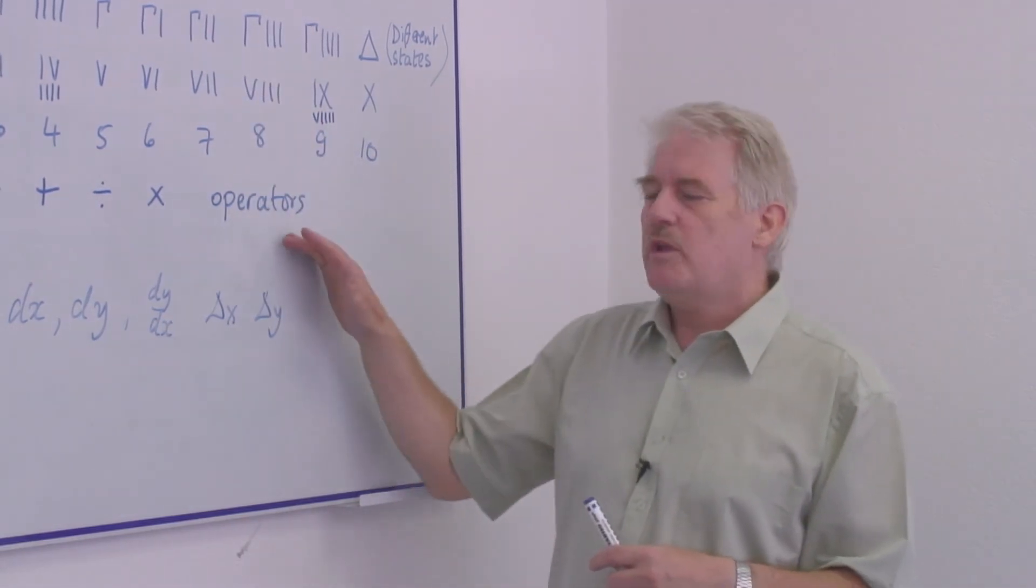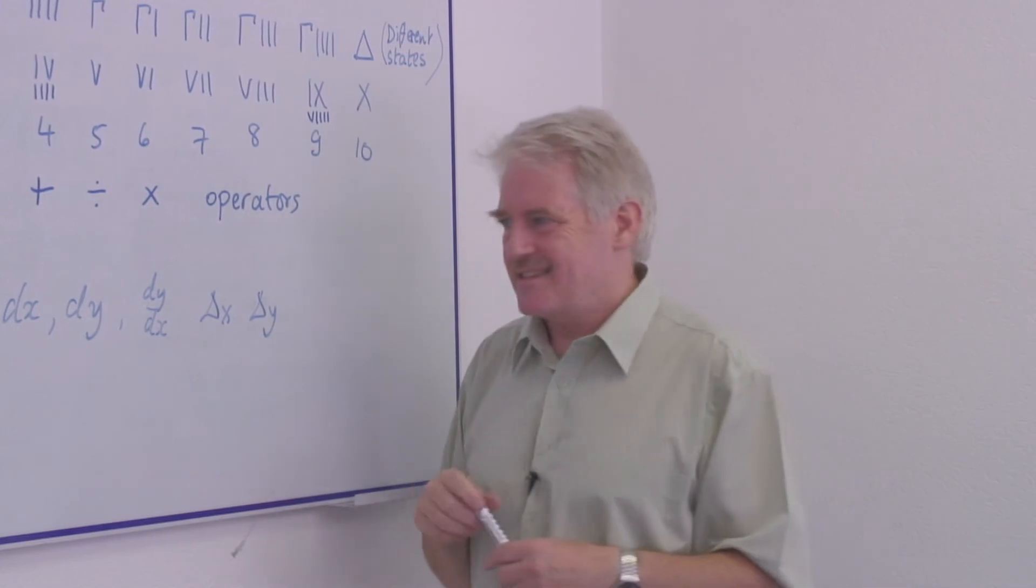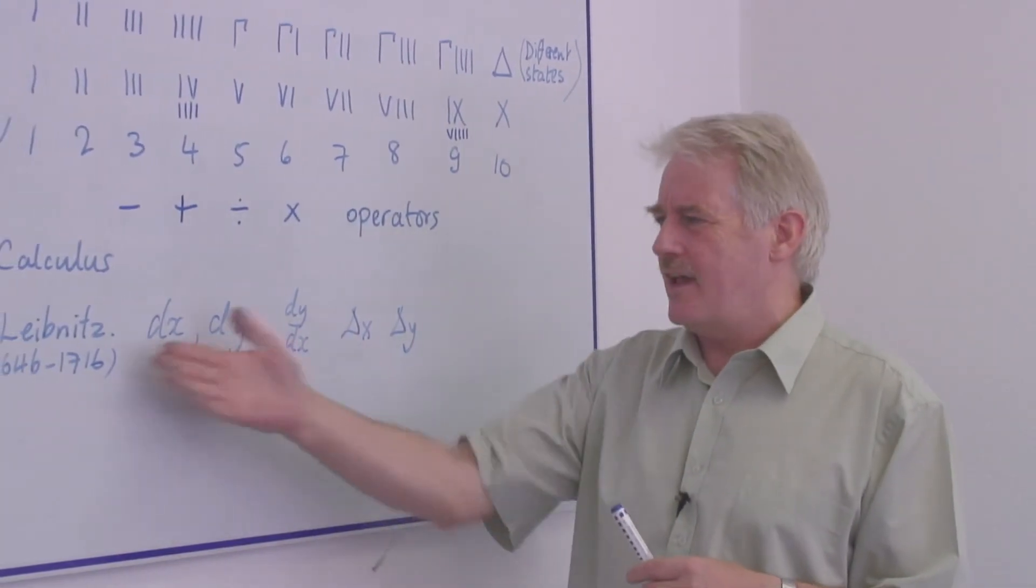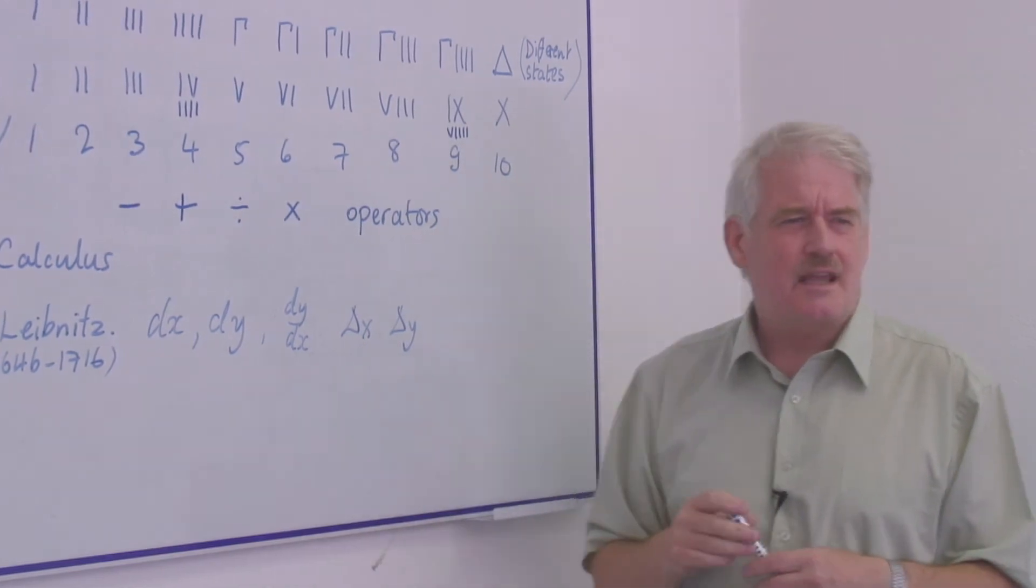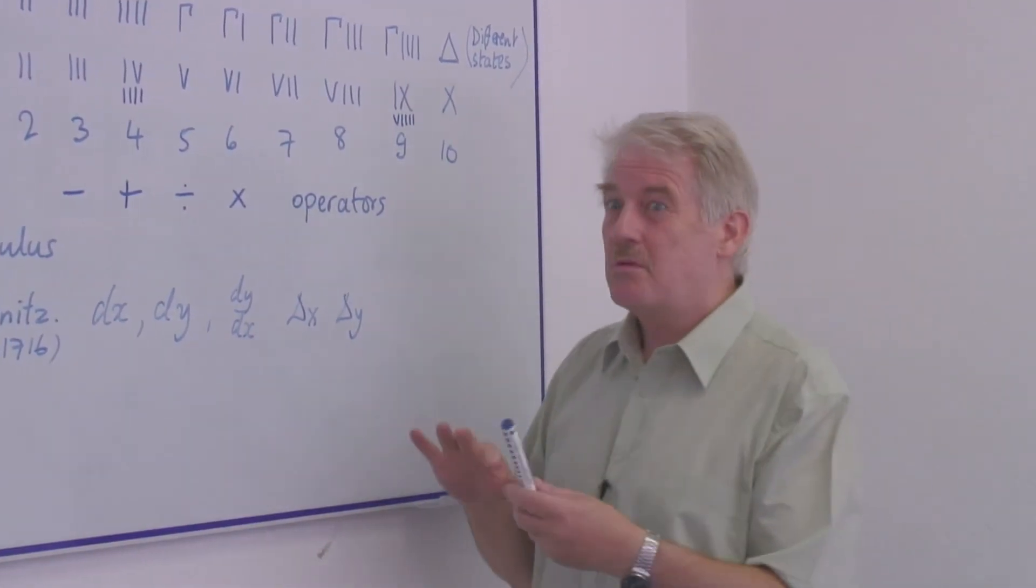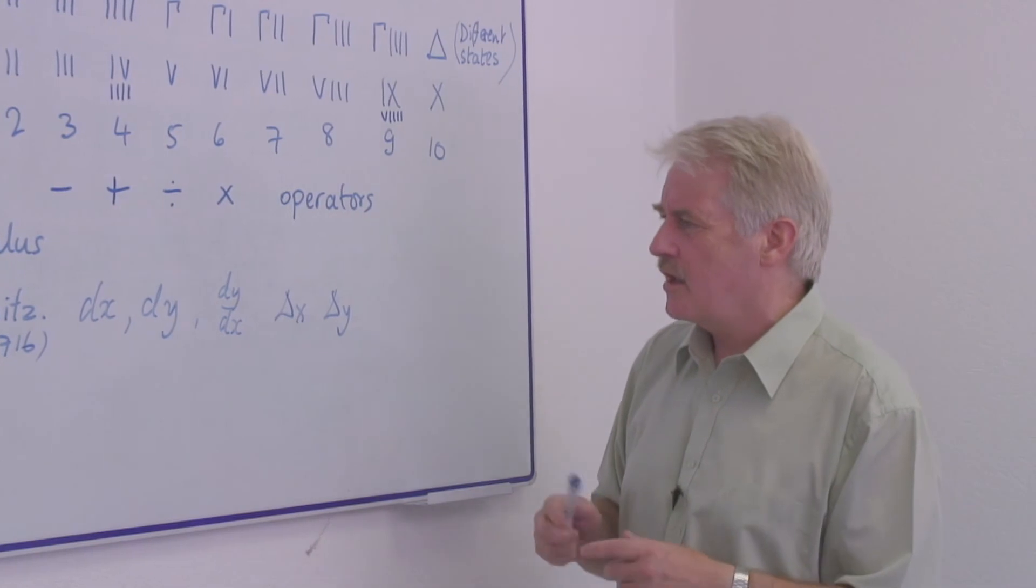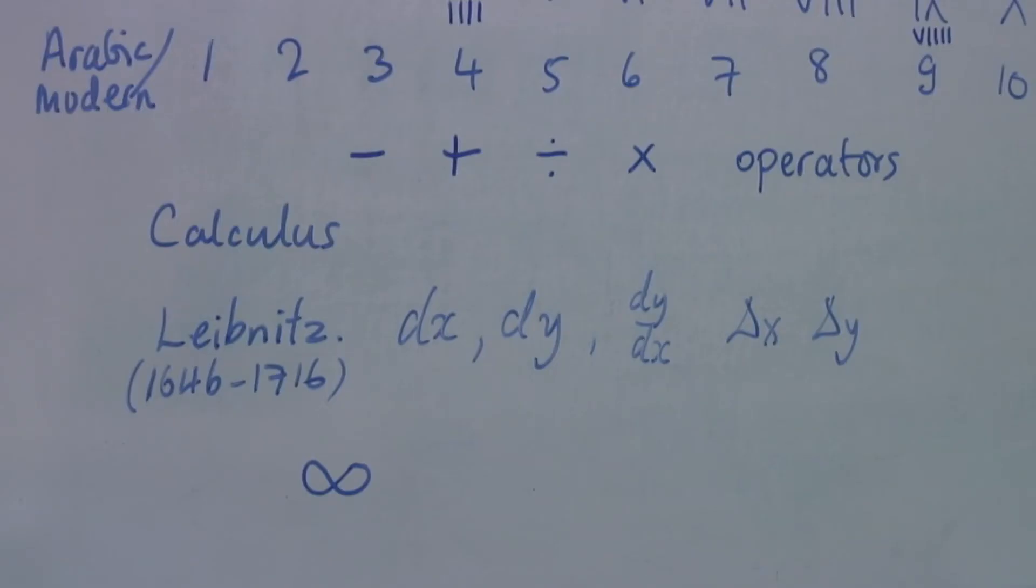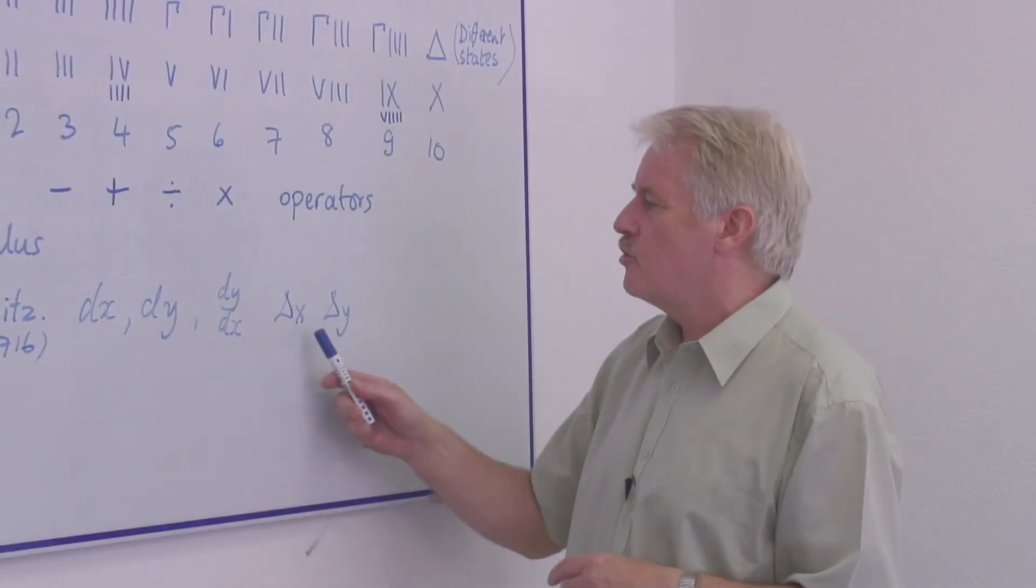But still we can't actually do mathematics. And for that we need developments like those of Leibniz and at the same time Newton and people in Britain were doing the same thing, where we develop the calculus notation. Each time we need new symbols to represent new things, new operations.